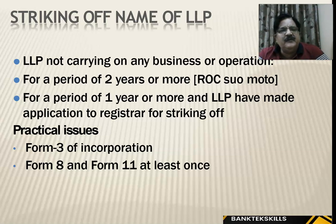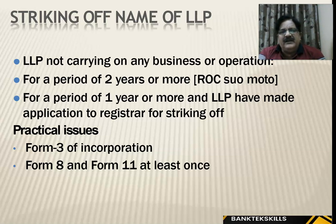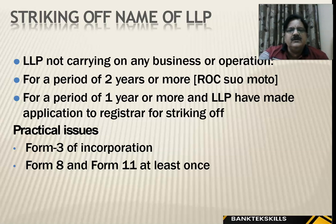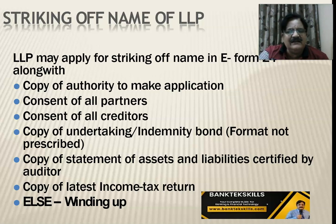For striking off the name of an LLP: if the LLP is not carrying any business or operations for a period of 2 years or more, the ROC can close the LLP suo motu — meaning without any notice. An LLP may also apply for striking off its own name using Form 24, along with authority from partners, consent, copy of the latest income tax return, statement of assets and liabilities, and an undertaking/indemnity bond.